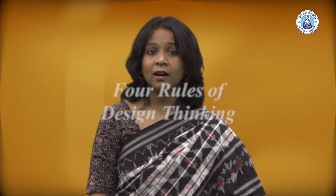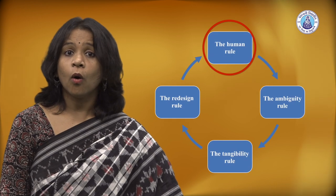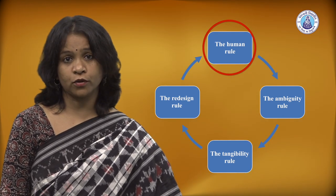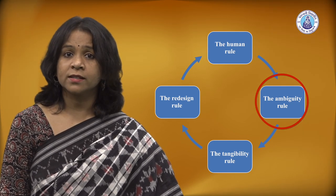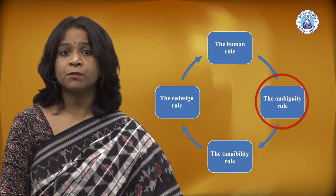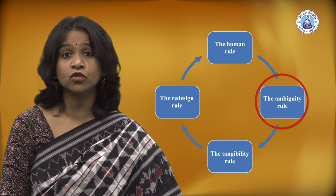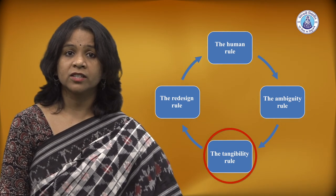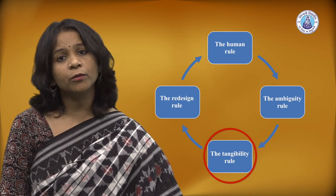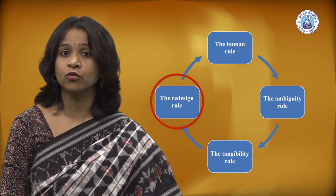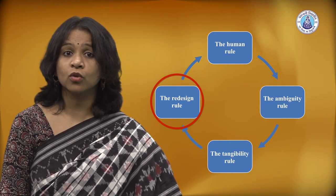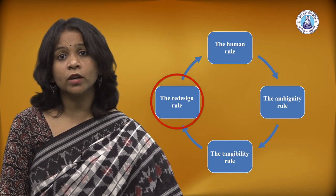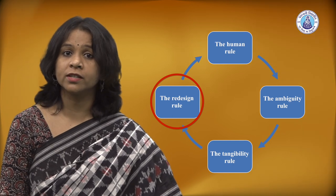The four rules of design thinking are: the human rule — all design activity is social in nature and any social innovation will bring us back to the human-centric point of view. The ambiguity rule — ambiguity is inevitable and cannot be removed or oversimplified; experimenting at the limits of your knowledge and ability is crucial to seeing things differently. The tangibility rule — making ideas tangible in the form of prototypes enables designers to communicate them more effectively. And the redesign rule — all design is redesigned; while technology and social circumstances may change, basic human needs remain unchanged, and we essentially only redesign the means of fulfilling these needs or reaching desired outcomes.